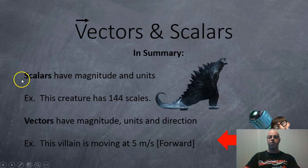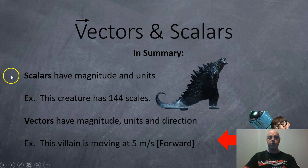Okay back to scalars and vectors in summary. Scalars have magnitude and units. For example this scaly creature here has 144 scales. And then vectors have magnitude unit and direction. So for example this villain here he's traveling forward at 5 meters per second. And I hope you know the difference now between vectors and scalars. Thank you.